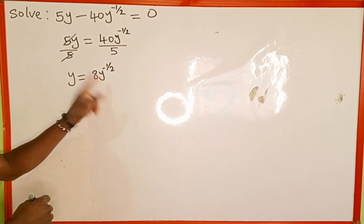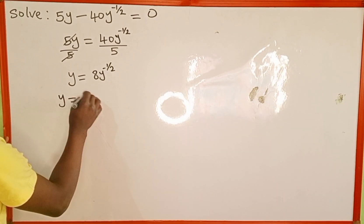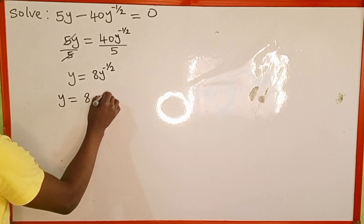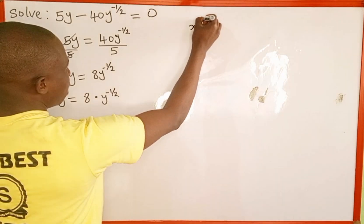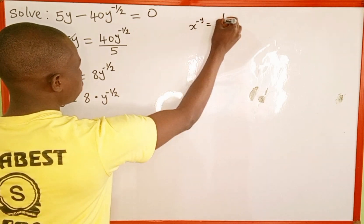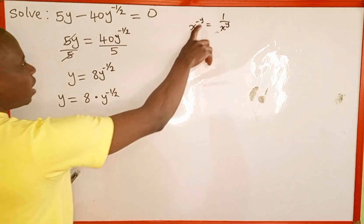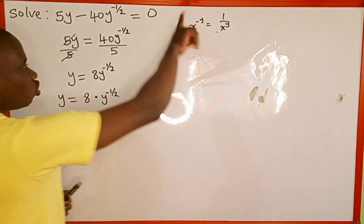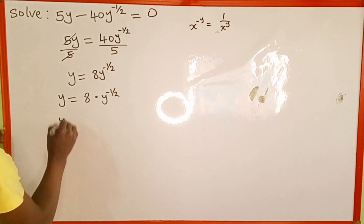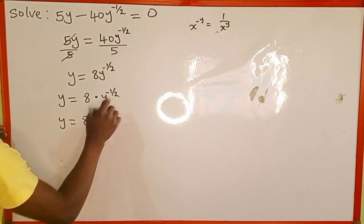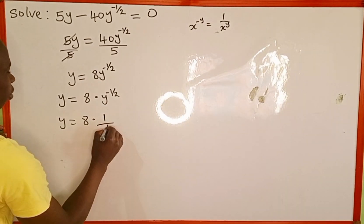So this 8 is multiplied by y to the power of negative half. Recall that when we have x raised to the power of negative y, it is the same as 1 over x raised to the power of positive y. When this negative exponent comes down it will change to positive. So y now will be equal to 8 multiplied by 1 over y to the power of positive half.